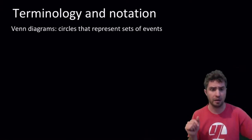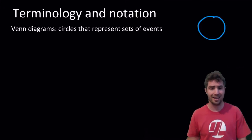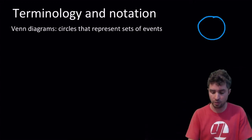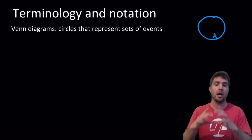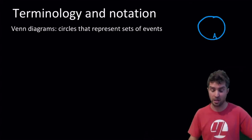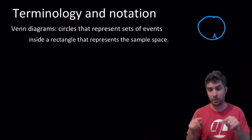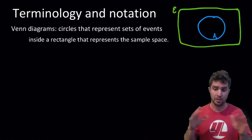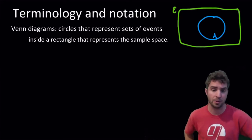First of all, let's just get Venn diagrams sorted. You're probably familiar with them. Typically, we just use some circles, or we could even just have one circle. The circle and the things inside the circle represent certain events — so this is event A. And then we put a rectangle around the outside, and that represents the sample space — all the various outcomes that could happen in an experiment or a situation.